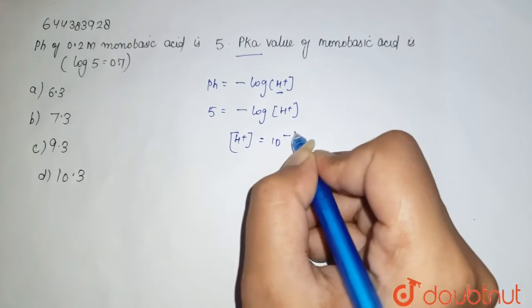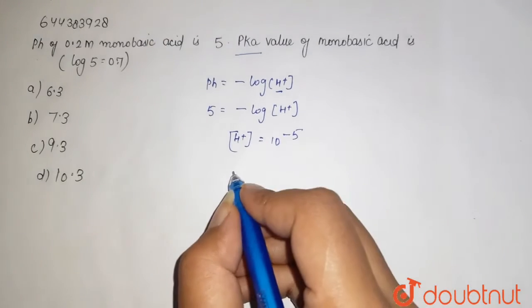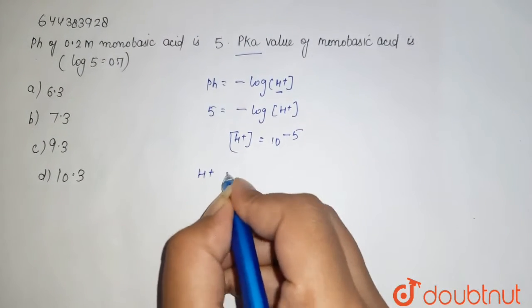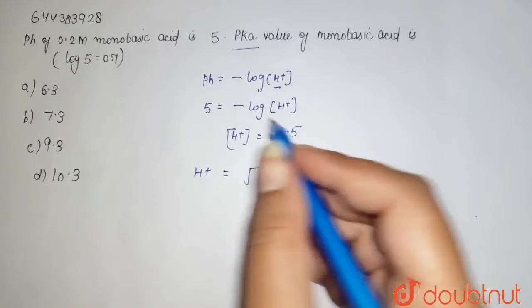which is equal to 10 to the power minus 5, so this is the concentration of your H+. Now we want to find the pKa here. H+ also equals to K into concentration - the concentration of the monobasic acid that is your 0.2.